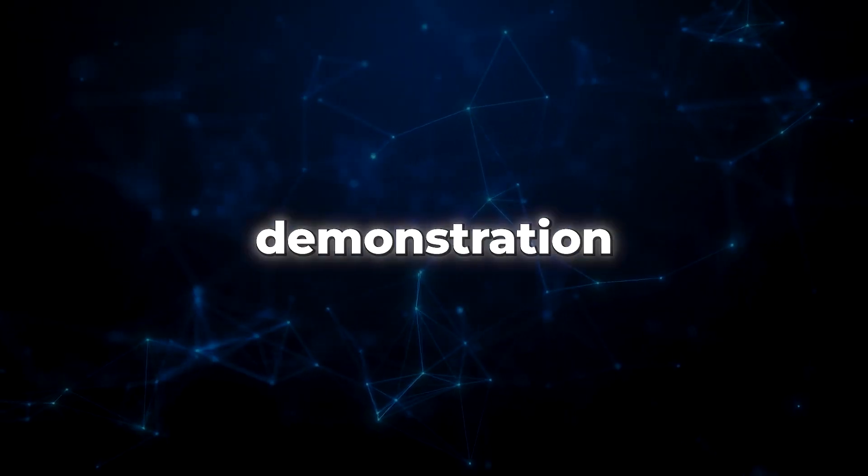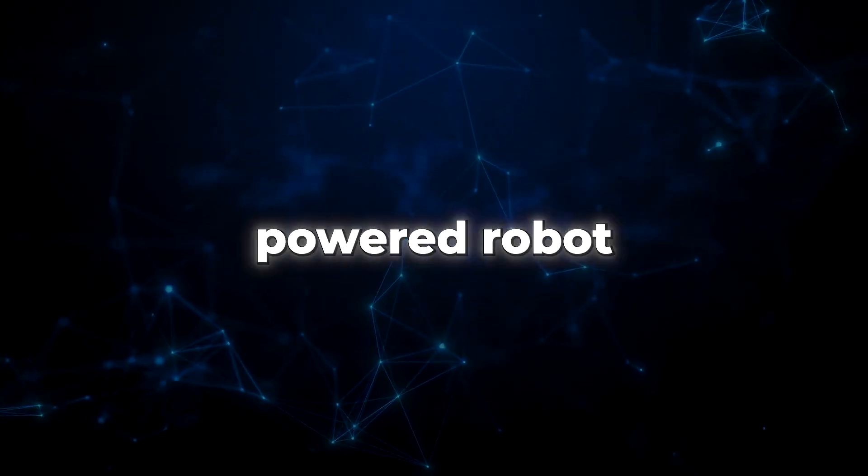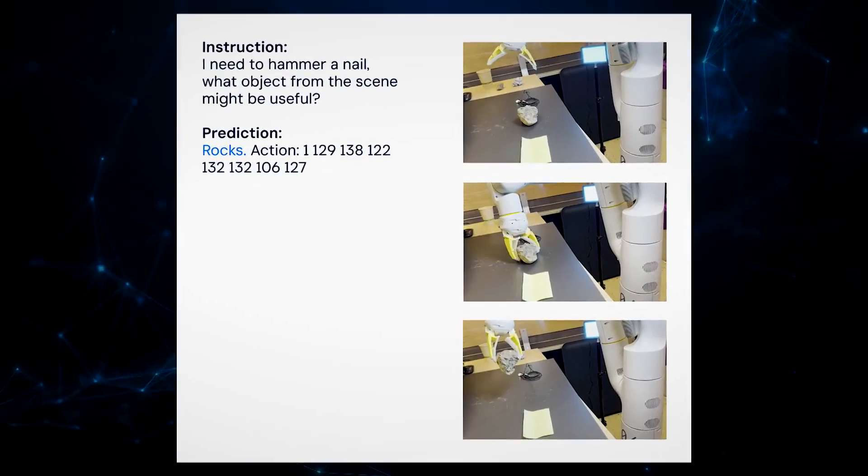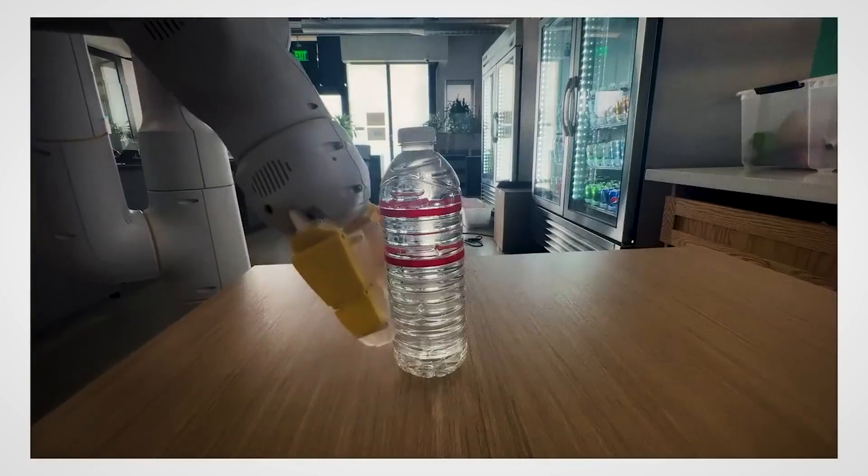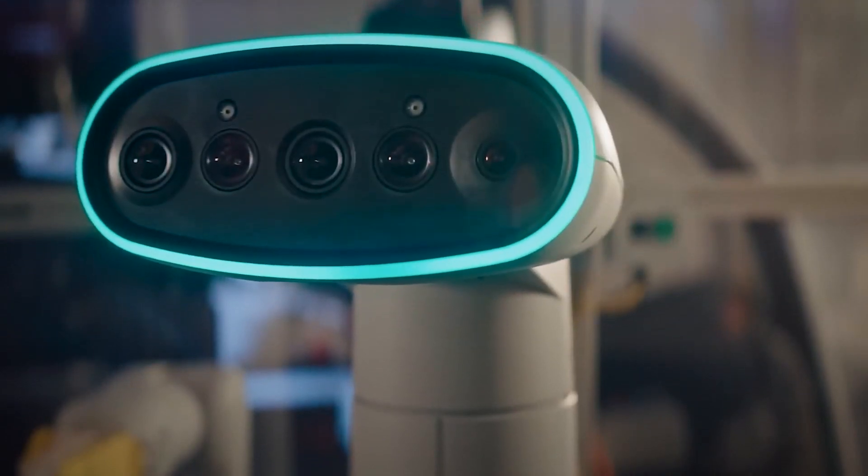In a jaw-dropping demonstration, the RT2-powered robot effortlessly picks out the perfect improvised hammer from a bunch of objects and even knows which drink to offer a tired person. The mind-blowing part is that it figures all of this out without anyone explicitly telling it the answers.